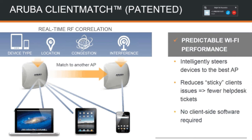How Aruba ClientMatch works is it will detect all the clients to see where they're located and whether there's a better AP they're better suited for. What it will do is make the access point I'm connected to look less attractive and make the access point I ought to be connected to look more attractive. So it will enhance your end-user experience by forcing clients to go to a better suited access point, which is really cool.